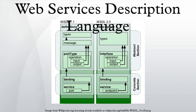WSDL 1.0 was developed by IBM, Microsoft, and Ariba to describe web services for their SOAP toolkit. It was built by combining two service description languages: NASSL from IBM and SDL from Microsoft. WSDL 1.1, published in March 2001, is the formalization of WSDL 1.0. No major changes were introduced between 1.0 and 1.1.